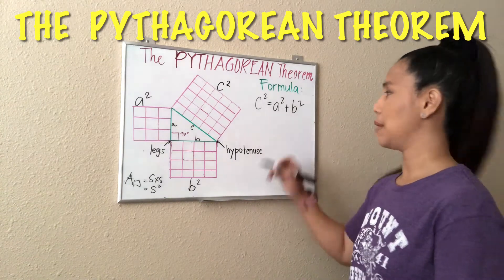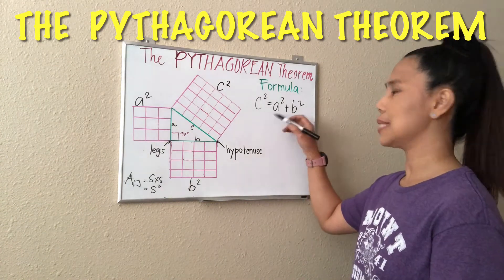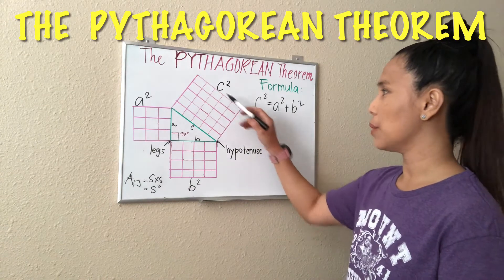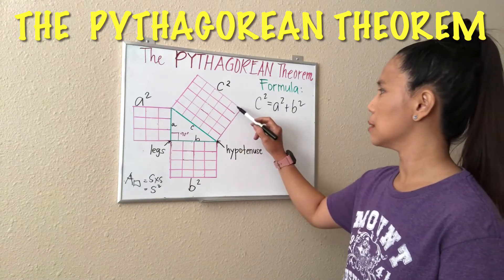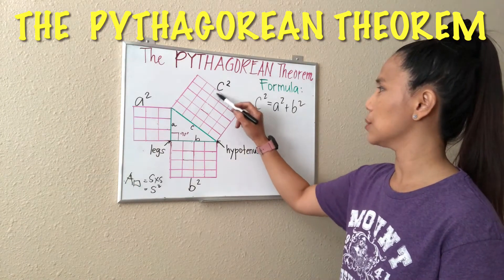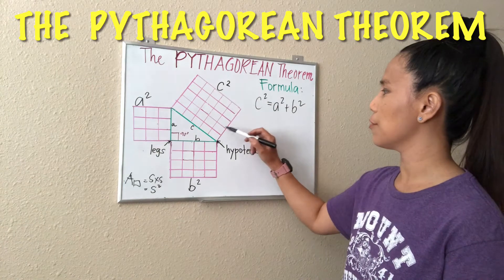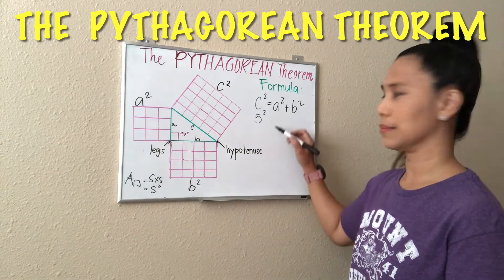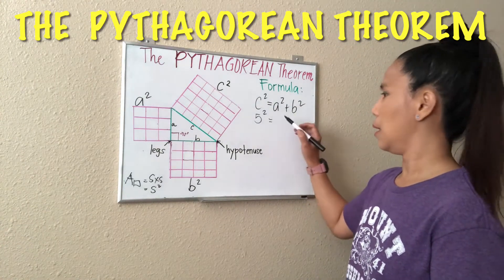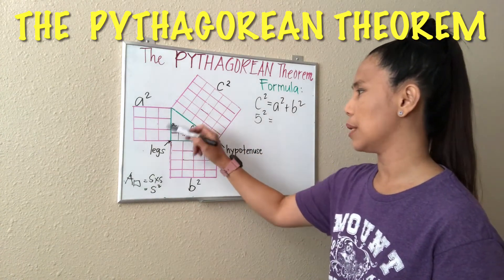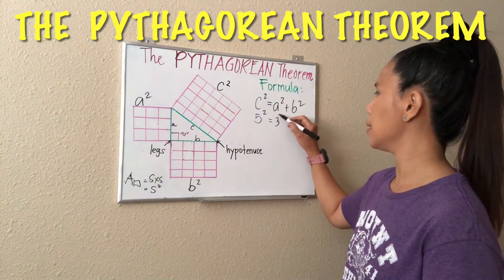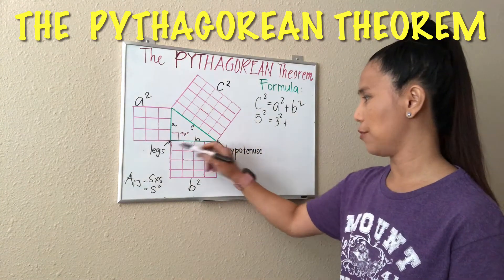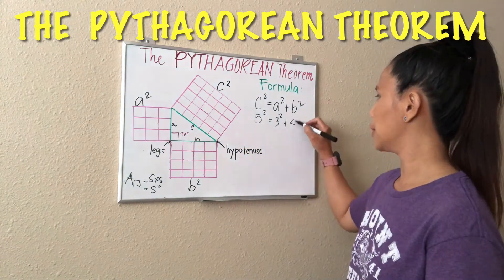Now let's substitute the values for C, A, and B. Since we don't have a number, we can just count these units. Counting the units, C is 5, so that means 5 squared. A is 3, so this is 3 squared. And then B is 4, so 4 squared.